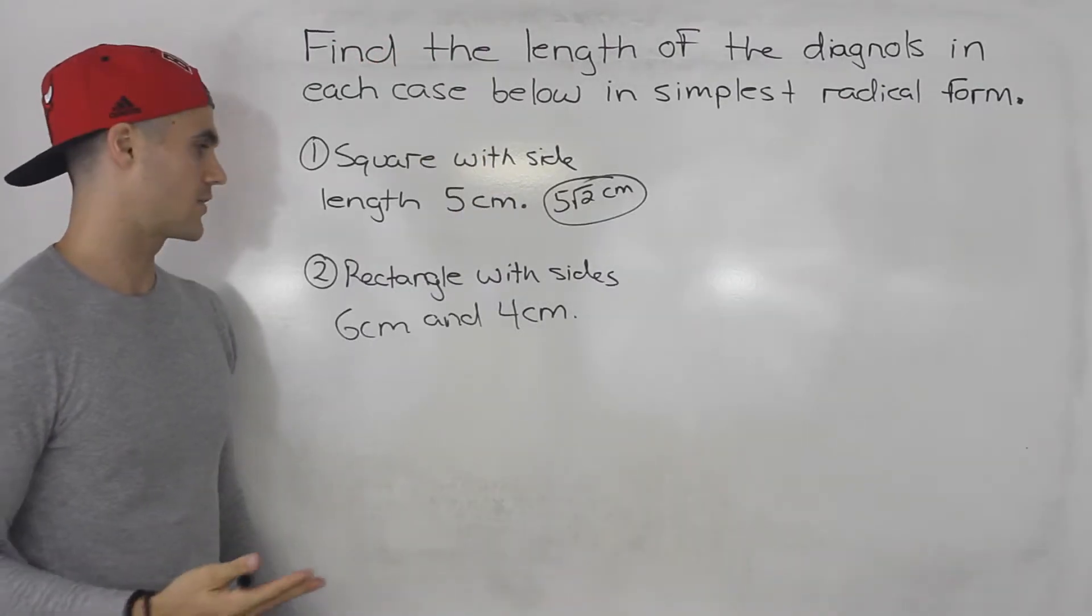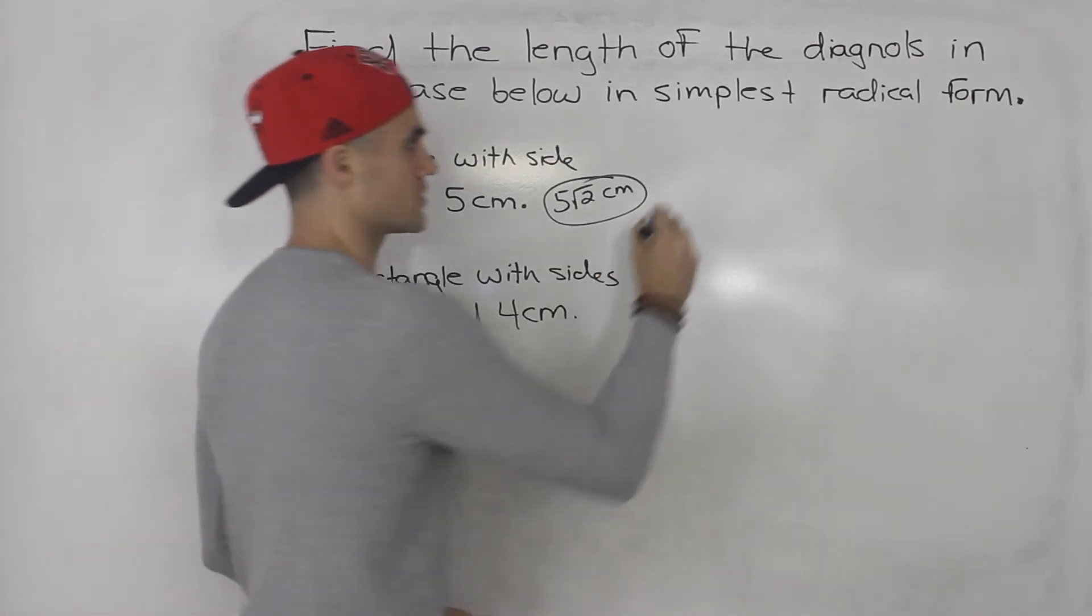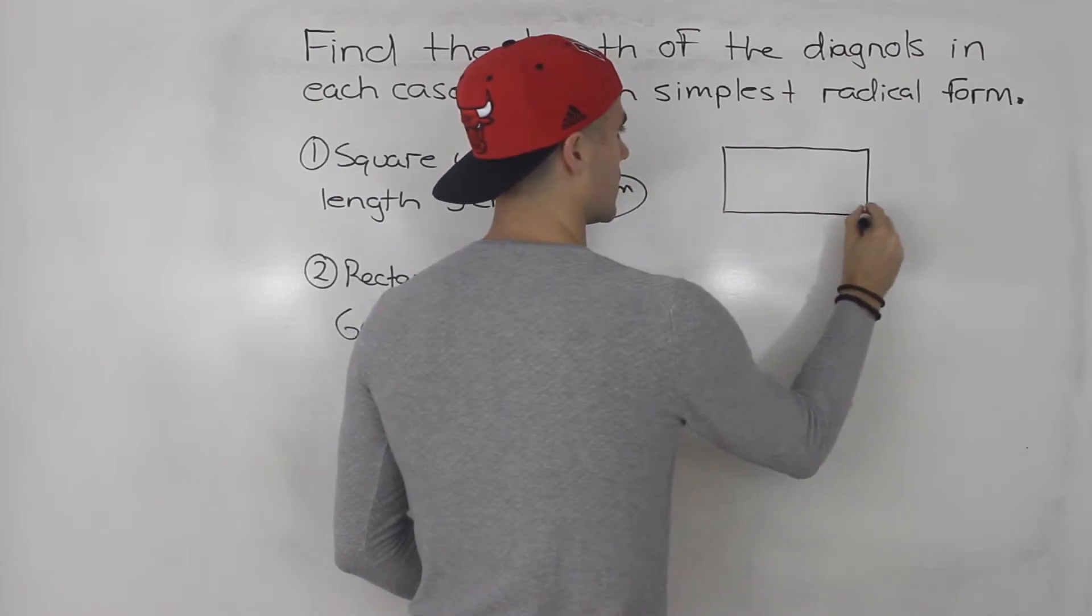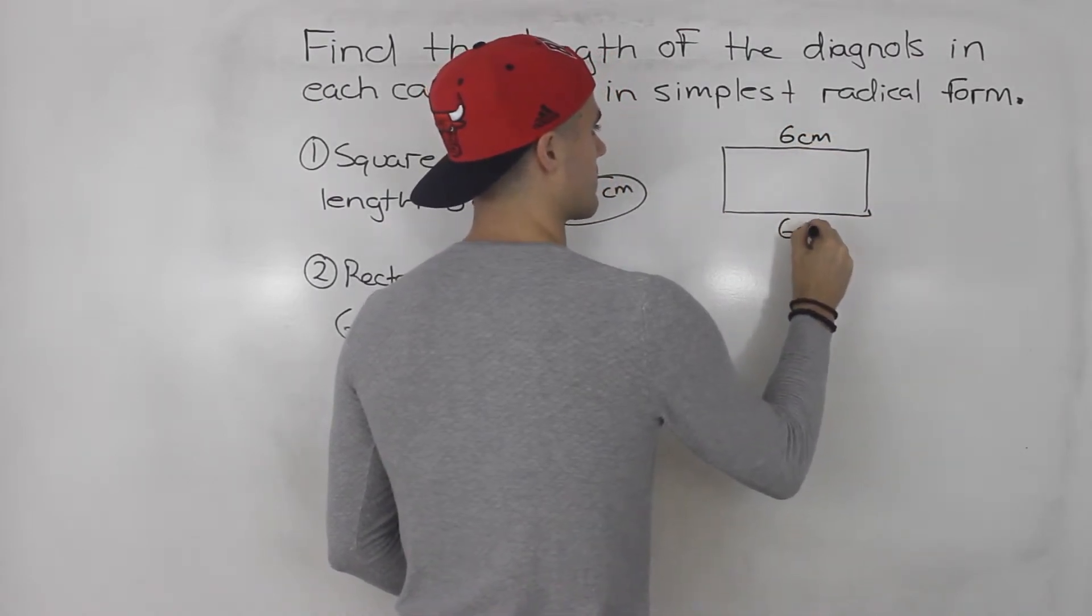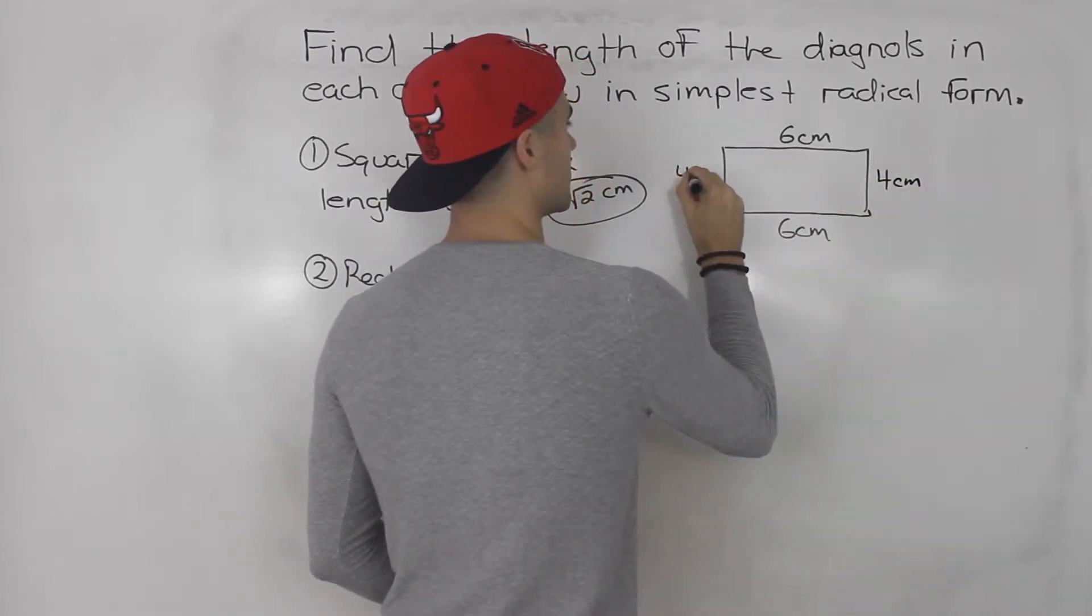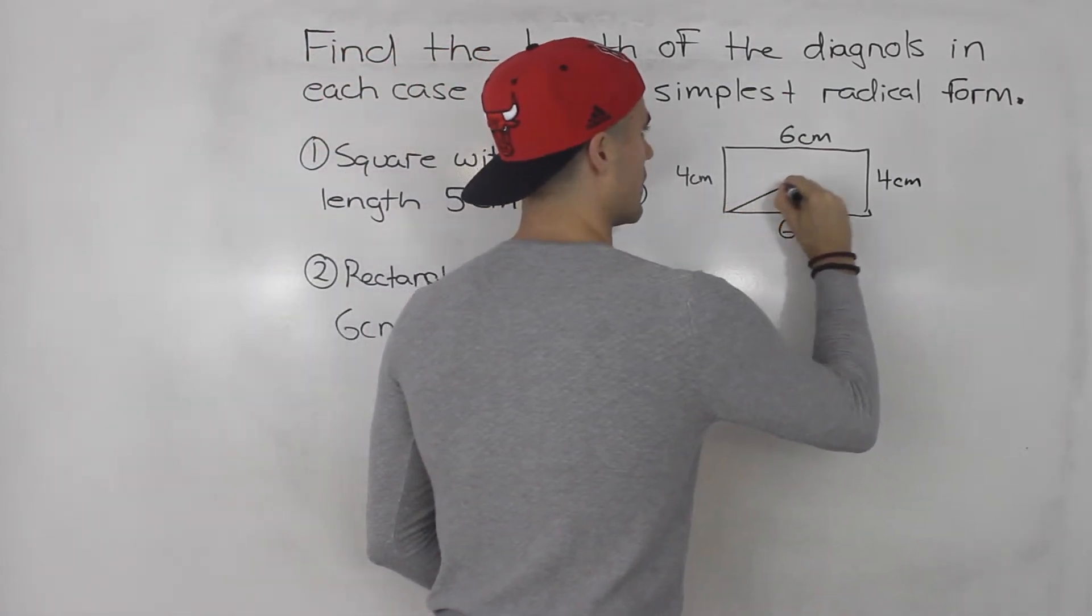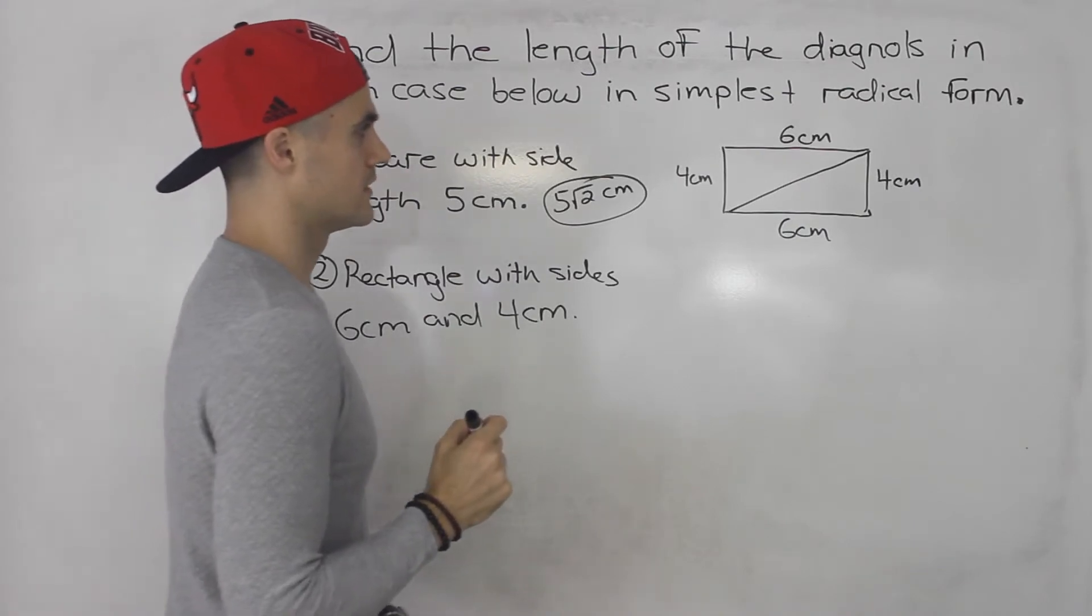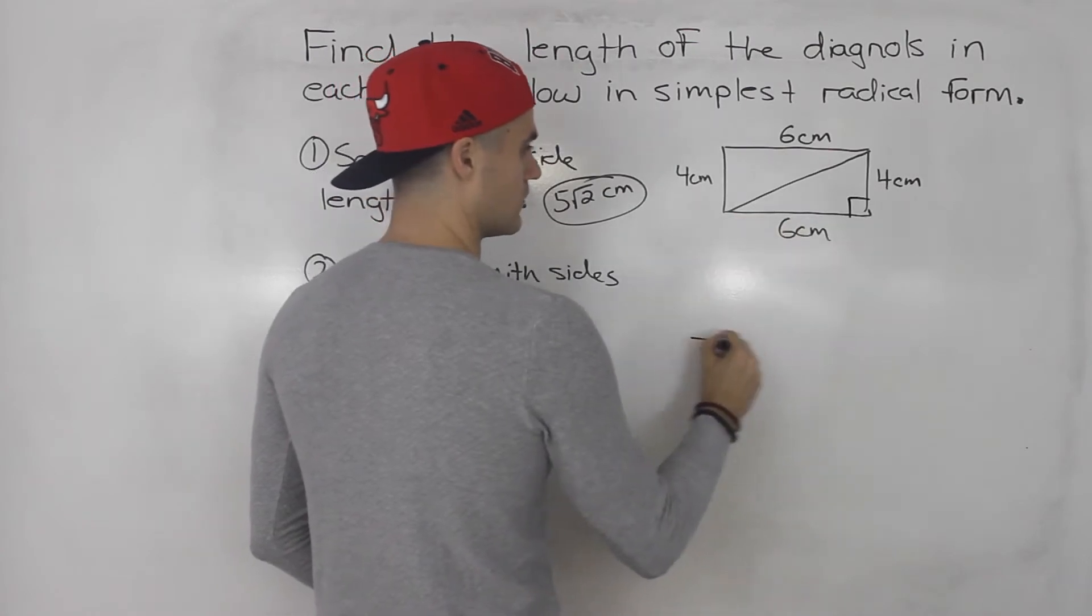Moving on to the second scenario, we got a rectangle with sides 6 centimeters and 4 centimeters. So if we draw that, we got 6 centimeters, that's the length. And then we got 4 centimeters. And again, we're finding the length of the diagonal, like that. So we could draw this triangle out.